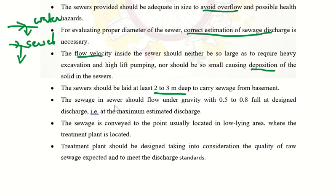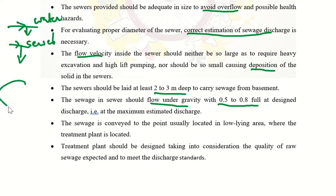The sewer design should be such that it can flow under gravity. The pipeline should be 0.5 to 0.8 full, without any settlement, maintaining proper flow. The water treatment plant will be at a higher elevation, and water is supplied by gravity flow to the community.